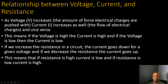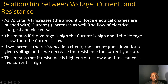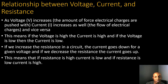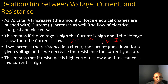Now let's look at the relationship between voltage, current, and resistance. As voltage increases — that is, the force with which electrical charges are pushed — current increases as well, and vice versa. This means if voltage is high, current is high; if voltage is low, current is low. This is called a direct relationship.